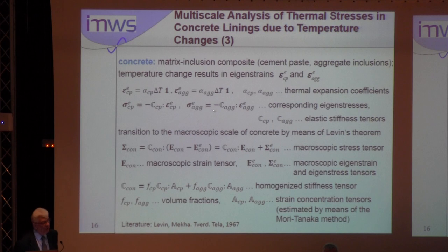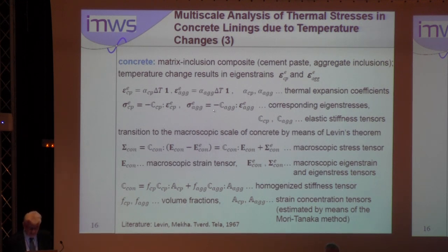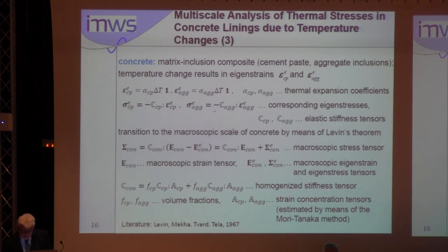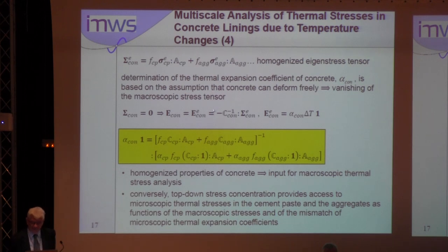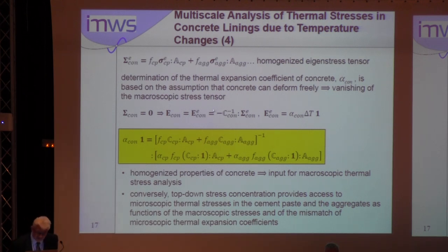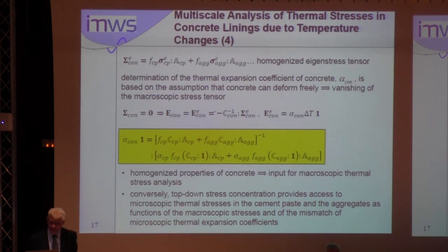The transition to the macroscopic scale of concrete is performed by means of Levin's theory. The formula for the macroscopic stress tensor contains the homogenized stiffness tensor C_con, which contains the volume fraction for the cement paste and for the aggregates, and the strain concentration tensors estimated by means of the Mori-Tanaka method. The formula also contains the macroscopic strain tensor and the macroscopic eigenstrain and eigenstress tensor. Determination of the thermal expansion coefficient of concrete is based on the assumption that concrete can deform freely, i.e., vanishing macroscopic stress tensor. After mathematical manipulations, the expression for the thermal expansion coefficient is given in the yellow box.